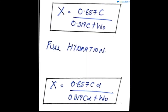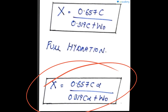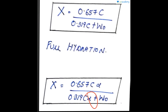For the gel space ratio equation, we have two conditions: complete hydration and partial hydration. For complete hydration, the formula is X = 0.65c / (0.319c + W₀), where c is the weight of cement in grams and W₀ is the volume of mixing water in ml. For partial hydration, the equation has an additional variable alpha, which represents the extent of partial hydration — how much percentage of hydration is being calculated.